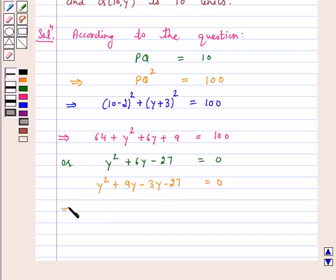This implies y(y + 9) minus 3(y + 9) is equal to 0. This implies y plus 9 is equal to 0 and y minus 3 is equal to 0.